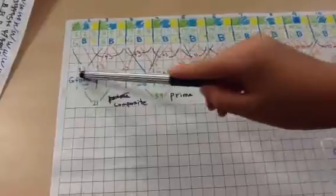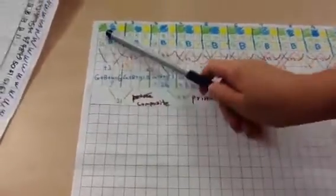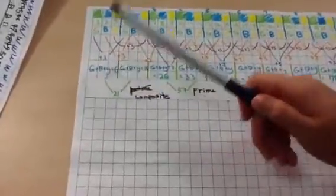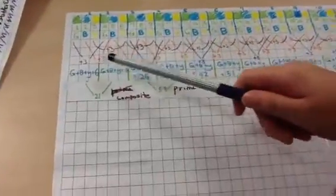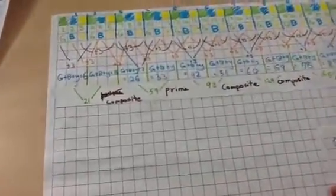And then I got, so for this term, G plus B plus Y equals 6. For the next, it's 15, and it goes along and along.